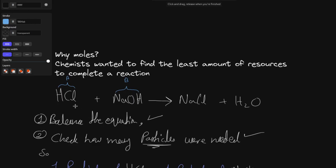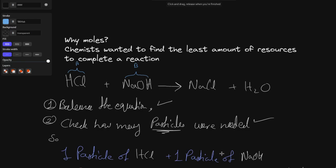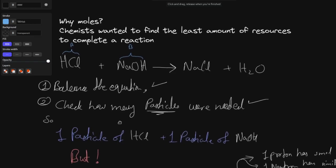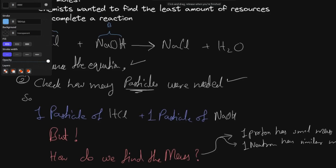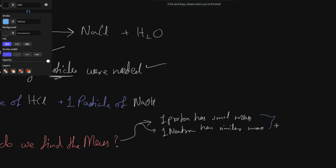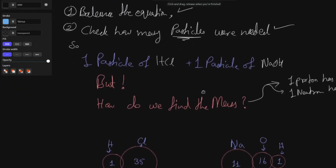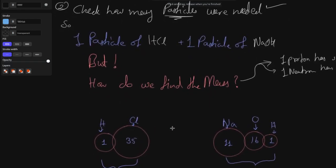We have established that we need one particle of HCl and one particle of NaOH. How do we figure out the amount of mass in grams? We can do that using specific properties. We know that a particle's mass is determined by two factors: proton number and neutron number — basically it is determined by the atomic mass. I have drawn here the particles and their respective masses. This does not represent bonding; it only represents the number of particles present. In hydrogen I have one proton, meaning one atomic mass unit.